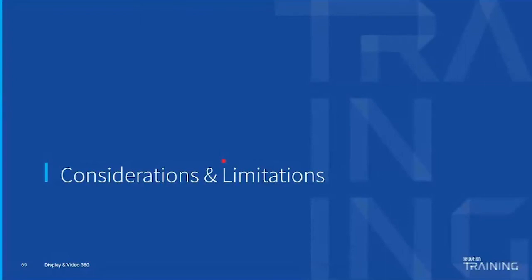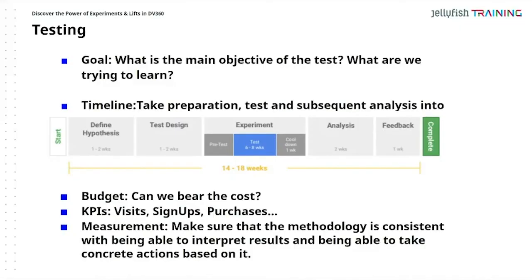How long should you test for? What is the ideal timeframe? You need to make sure you have a goal, prepare for your timeline, test, and do subsequent analysis. We recommend 14 to 18 weeks total: one to two weeks to think about and define the hypothesis, one to two weeks to design and get client approval, six to eight weeks for pre-test and testing, then two weeks of analysis and one week of feedback. That's your full testing period.